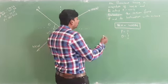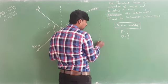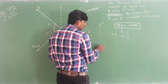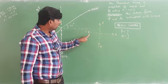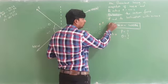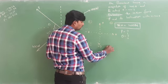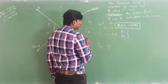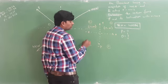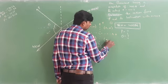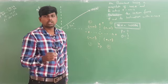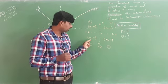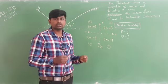To find theta and P, first remember the quadrant system. In the first quadrant, the sign of x and y are both positive. In the second quadrant, x is negative and y is positive. In the third quadrant, x is negative and y is also negative. In the fourth quadrant, x is positive and y is negative.